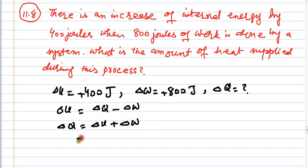Delta Q equals 400 plus 800. The total heat supplied is 1200 Joules. That is the answer.